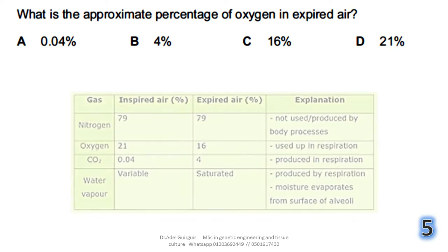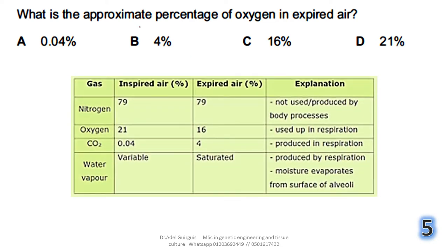The answer is respiration. Question 5: what is the approximate percentage of oxygen in expired air? We now know that oxygen in expired air is 16%, compared to 21% in inspired air — the difference of 5% is taken by cells in the process of respiration. The answer is C.